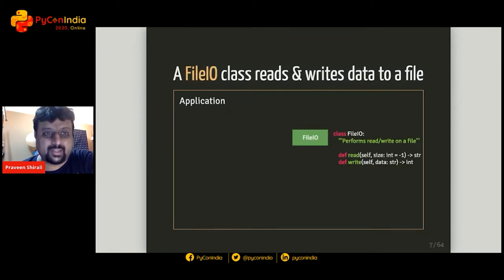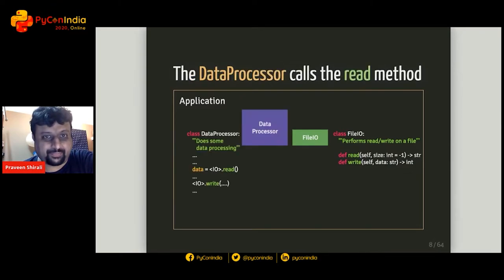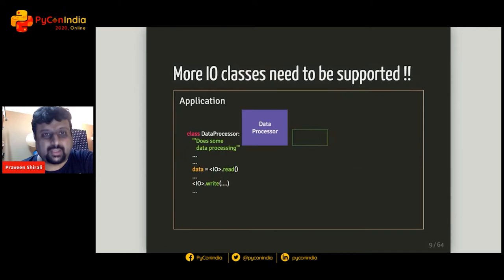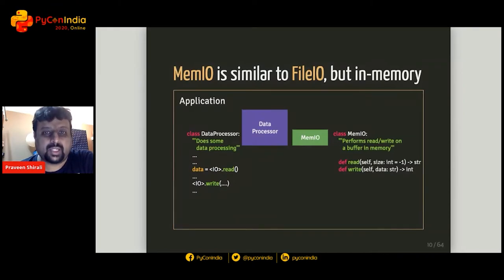Somewhere in this application is a class called FileIO, which is capable of reading data from a file and writing data to a file. It does this through the read and write methods typically found on file-like objects. The DataProcessor depends on the FileIO instance and calls its read and write methods during execution. Now let's say the application needs to support more data sources — consider a class called MemIO.